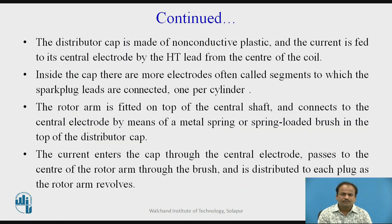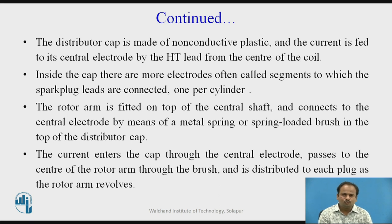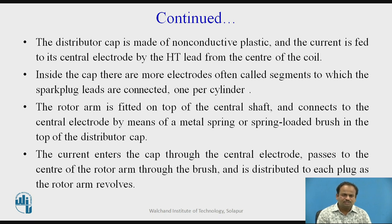The distributor cap is made of non-conductive plastic and the current is fed to its central electrode by a high-tension lead from the center of the coil. Inside the cap there are more electrodes — often called segments — to which the spark plug leads are connected, one per cylinder. The rotor arm is fitted on top of the central shaft and connects to the central electrode by means of a metal spring or spring-loaded brush in the top of the distributor cap. The current enters the cap through the central electrode, passes to the center of the rotor arm through the brush, and is distributed to each plug as the rotor arm revolves.